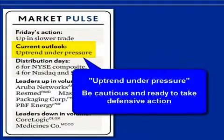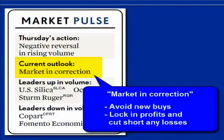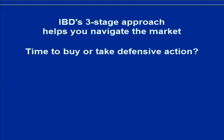The second stage is uptrend under pressure — a time to be cautious and ready to take defensive action since the uptrend may now be starting to weaken. The third is market in correction, which means the uptrend has ended and a downturn has taken hold. You want to avoid making any new buys and be sure to lock in your profits and cut short any losses. That three-stage approach helps you navigate the market.